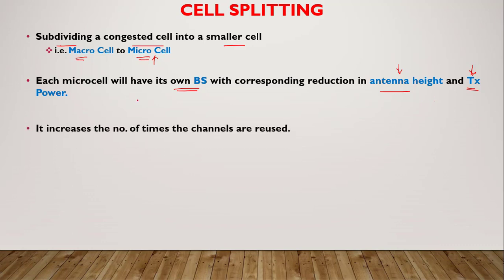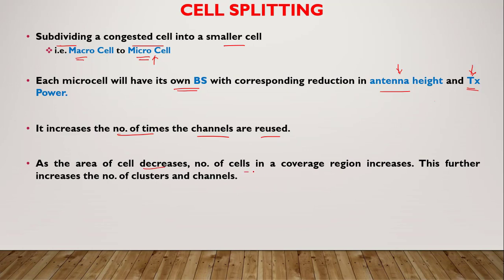With cell splitting, the available channels are reused more frequently because we create smaller cells. As the area of a cell decreases, the number of cells in a coverage region increases. More cells are required to cover the same region, which increases the number of clusters, increases the number of available channels, and hence further increases the capacity of the cellular system.